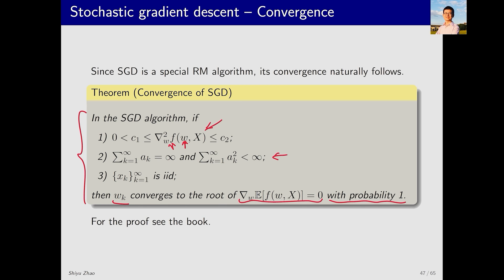The second condition is about the coefficient alpha_k. Basically, it involves two equations. The sum of alpha_k should be infinite, and the sum of the squares of alpha_k should be finite.